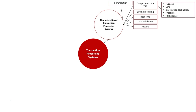The components of a transaction processing system are essentially the same as any information system, but we need to know how they specifically relate to transaction processing systems. These areas are: purpose, data and information, information technology, the information processes, and participants.